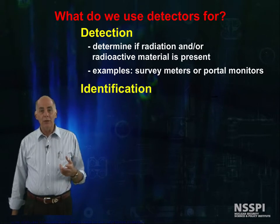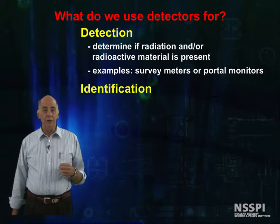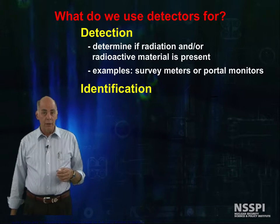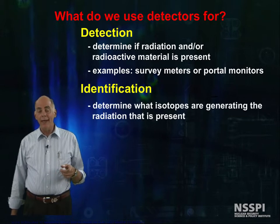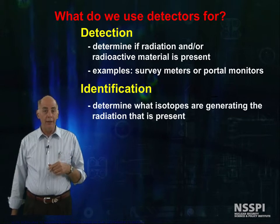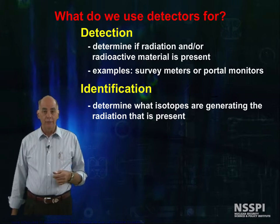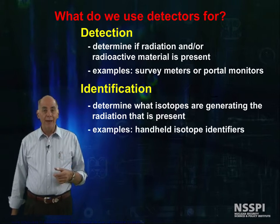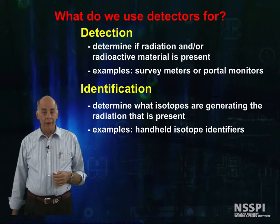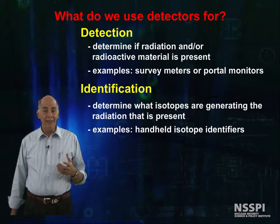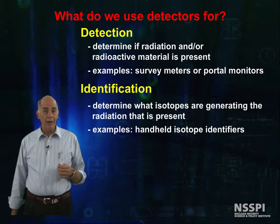The second thing we use detectors for is identification. By that, I mean we can actually determine what nuclide is generating the radiation. Examples of this are hand-held isotope identifiers. These are spectroscopy detectors, which we'll talk about in a minute.